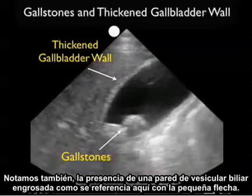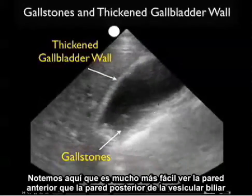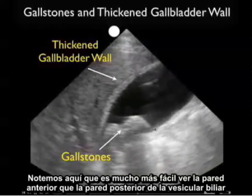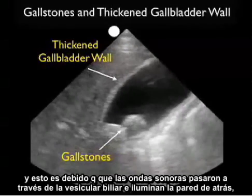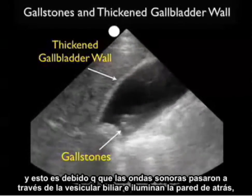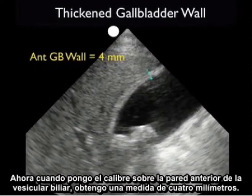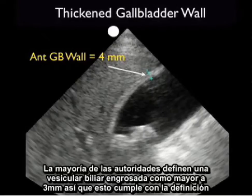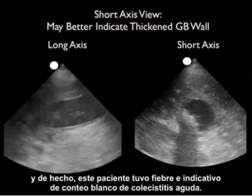Notice also the presence of a thickened gallbladder wall as referenced here with a small arrow. Notice that it's much easier to see the anterior wall than the posterior wall of the gallbladder, because the sound waves race through the gallbladder and light up the back wall, making it difficult to get a full sense of how thick it is. When I put the calipers down on the anterior gallbladder wall, I get a measurement of four millimeters. Most authorities define a thickened gallbladder wall as greater than three millimeters, so this meets the definition. In fact, this patient had a fever and a white count indicative of acute cholecystitis.